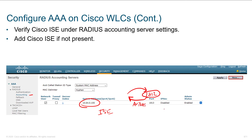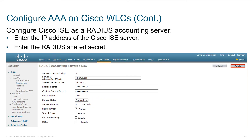Port 1813 and the legacy port 1646 are what's used for accounting. If you want to get fancy, remember that IPsec can work in tunnel mode or transport mode. Transport mode is host to host, so we could actually protect this RADIUS accounting traffic if we wanted to. We're just defining another AAA server — again, we can set different index priorities, each server goes into a group, and then our policies will point towards that group.